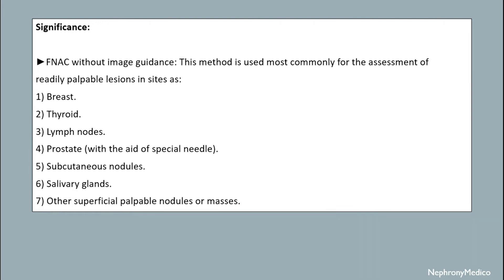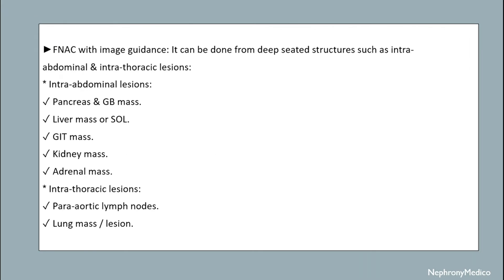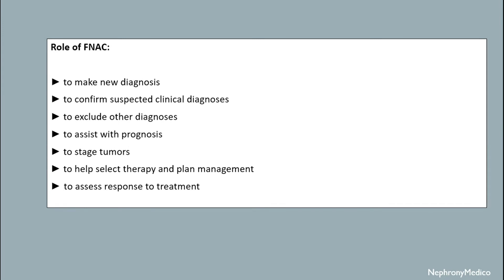FNAC with image guidance is done for deep-seated structures such as intra-abdominal and intrathoracic lesions like pancreas and gallbladder mass, liver mass, GIT mass, kidney mass, para-aortic lymph nodes, and lung mass lesions.